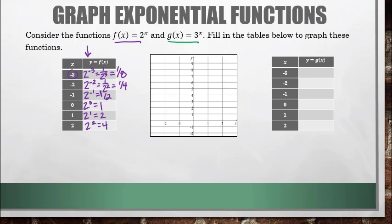2 to the 1 is 2 and 2 to the 2 is 4. So when I go to graph these, I get the points: negative 3, 1/8; negative 2, 1/4; negative 1, 1/2; 0, 1; 1, 2; and 2, 4.